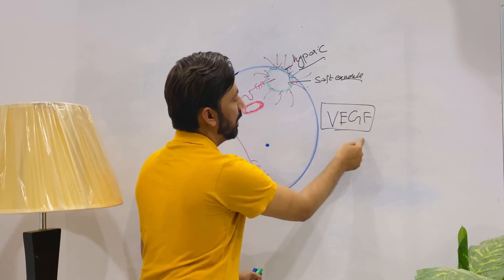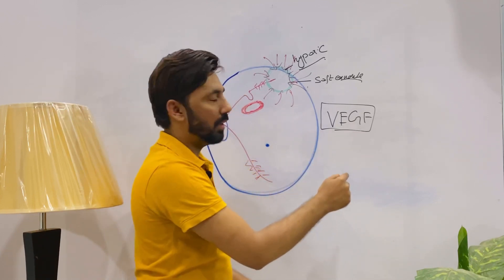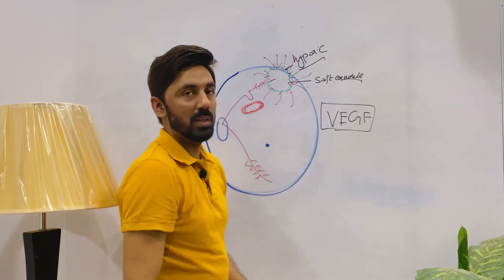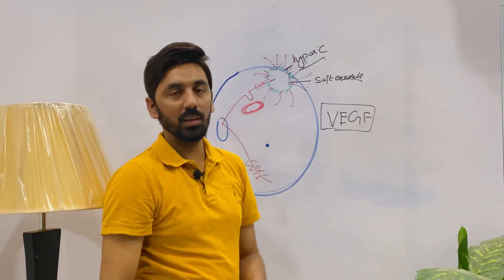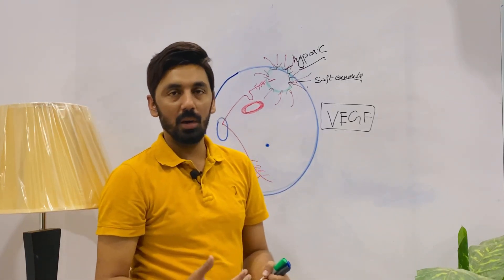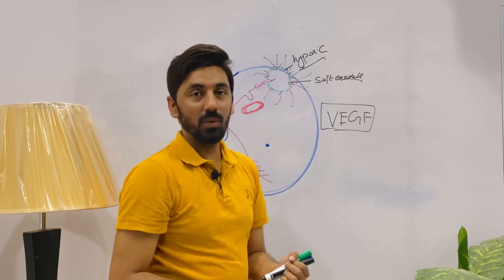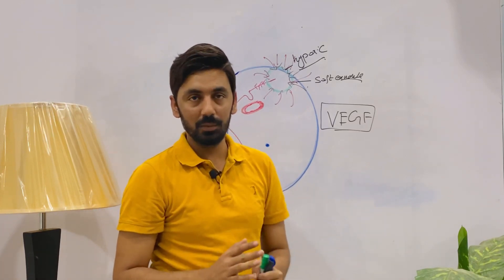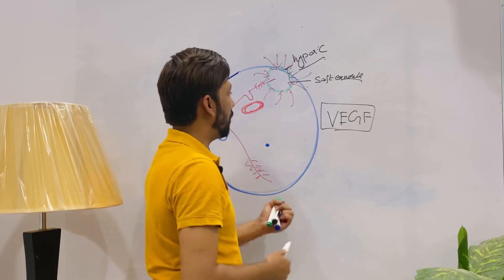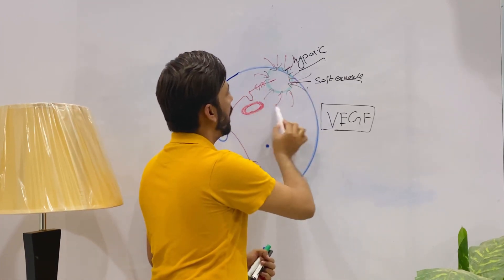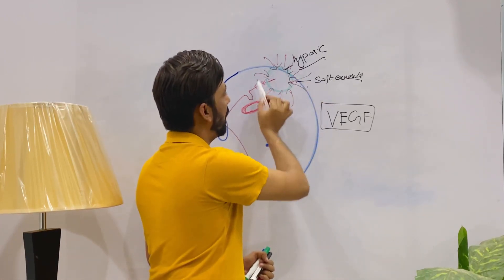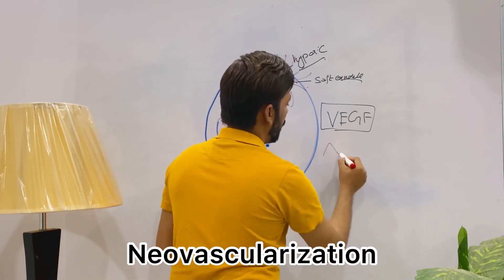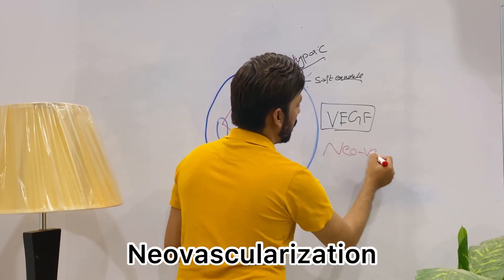Blood is strongly contraindicated and not allowed in the retinal tissues. But due to this 'silly friend' — vascular endothelial growth factor — the whole retina accumulates blood vessels and becomes filled with blood, which is very toxic and not good for the survival of the retina. The formation of these leaky, fenestrated blood vessels is called neovascularization.